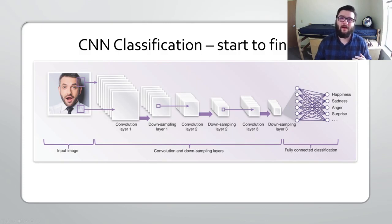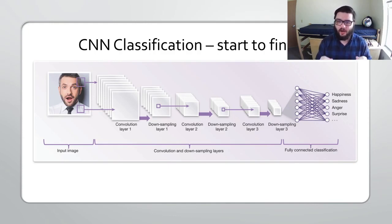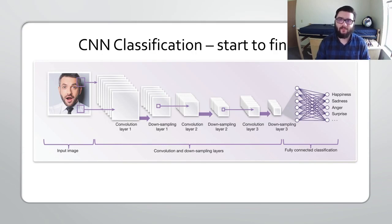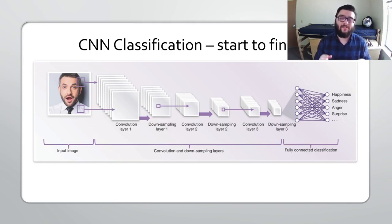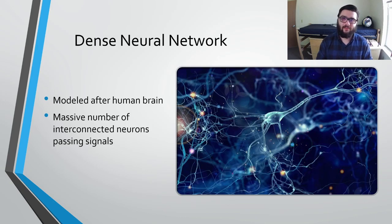More specifically, let's talk about how our model works. We use a convolutional neural network, or CNN. Here you can see a very high-level view of what a CNN looks like. You start with an input image, and that image is then passed through a hierarchy of convolutional and downsampling layers, which is used to extract the important features out of the image. The final layer then outputs a feature map into a fully connected dense neural network, and that neural network makes the final prediction on the image.